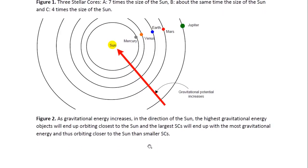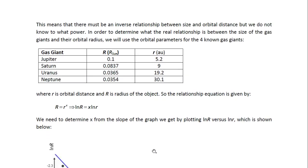Now as gravitational energy increases in the direction of the Sun, so in the direction of the red arrow, the highest gravitational energy objects will end up orbiting closest to the Sun. And the largest stellar cores will end up with the most gravitational energy, and thus orbiting closer to the Sun than smaller stellar cores. So distance increases in this direction, but size increases in the opposite direction. So that means that there should be an inverse relationship between size and orbital distance. But we do not know to what power.